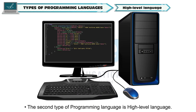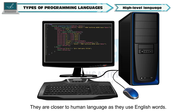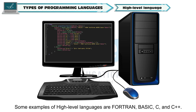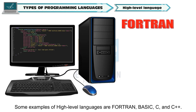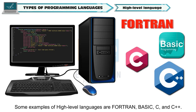The second type of programming language is high-level language. These languages were developed after low-level languages. They are closer to human language as they use English words. High-level languages are not machine-dependent. Some examples of high-level languages are Fortran, Basic, C and C++.